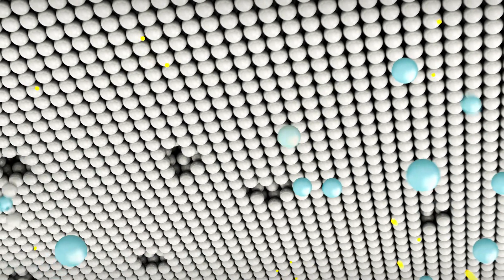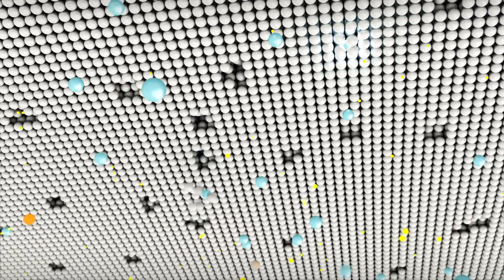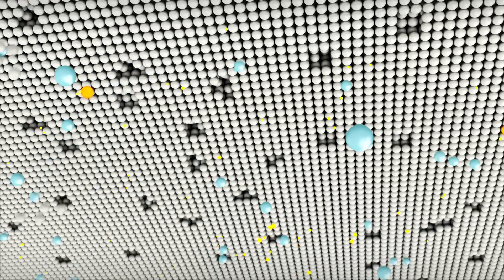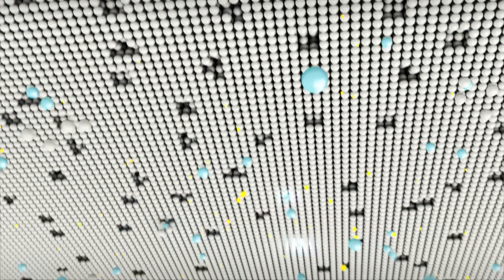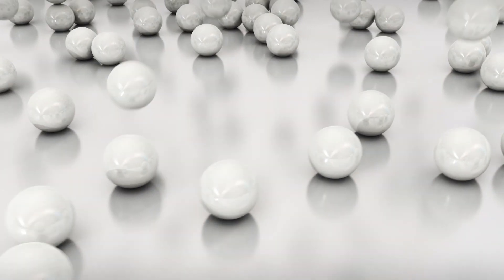The argon ions collide with the target and eject molybdenum atoms from its surface, which are accelerated to the glass substrate. This is what the sputtering process is all about. In a way, it resembles a game of billiards.